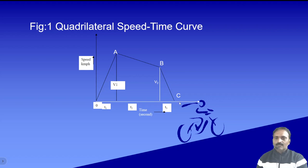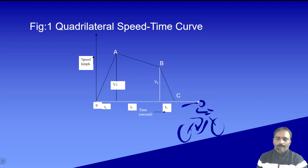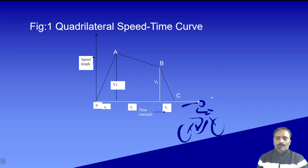The area of the graph O-A-B-C gives us the total distance traveled D. Compared to the simplified trapezoidal speed-time curve, a few differences exist: we have two speeds v1 and v2, and the coasting retardation beta-c is involved. Now let us find the derivations for this quadrilateral speed-time curve.